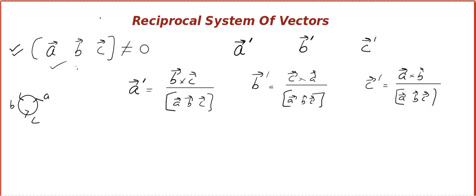C dash is equal to A cross B, the whole divided by STP. This is called the reciprocal system. Remember, ABC and A dash, B dash, C dash are called reciprocal system.